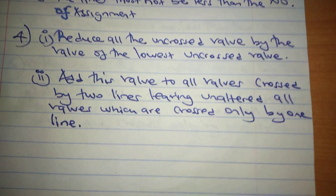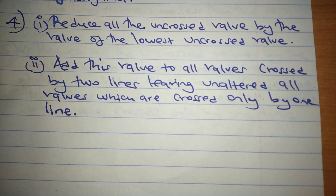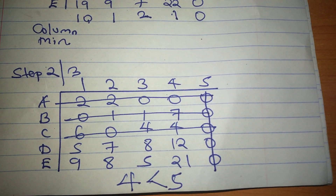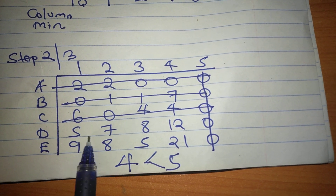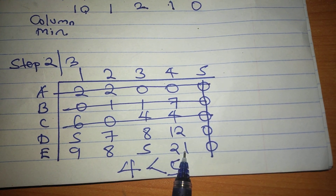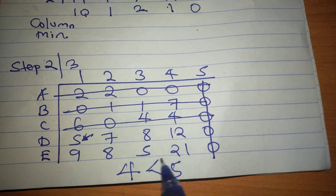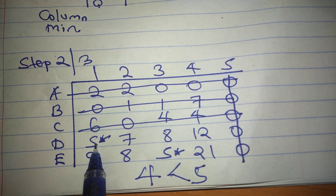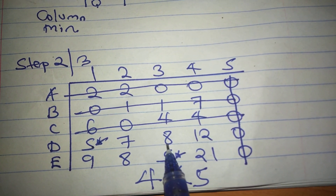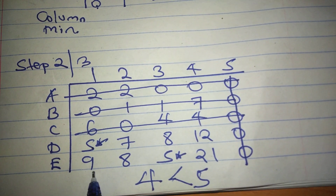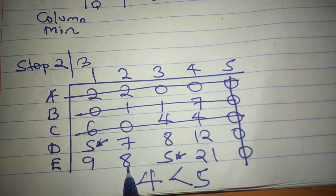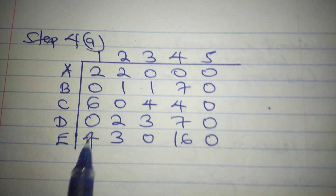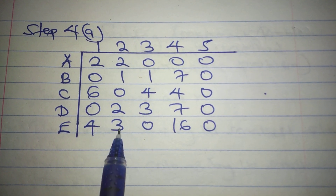Step 4 states: reduce all uncrossed values by the value of the lowest uncrossed value. The uncrossed values are 5, 7, 8, 12, 9, 8, 5, 21 — so the lowest uncrossed value is 5. Subtracting 5 from each: 5−5=0, 7−5=2, 8−5=3, 12−5=7, 9−5=4, 8−5=3, 5−5=0, 21−5=16. The updated uncrossed values in the table are 0, 2, 3, 7, 4, 3, 0, 16.